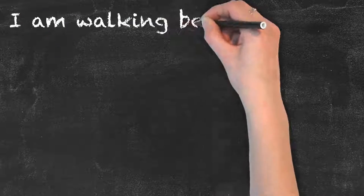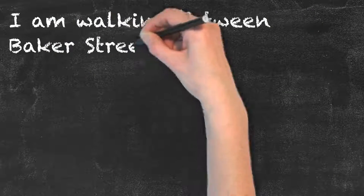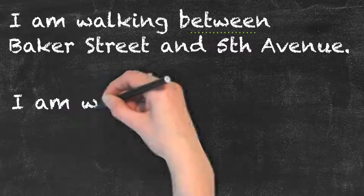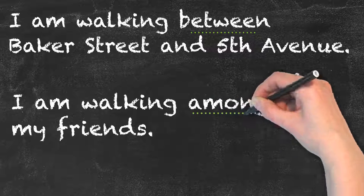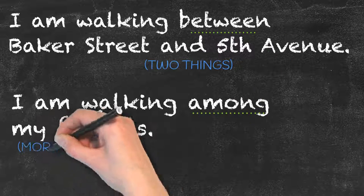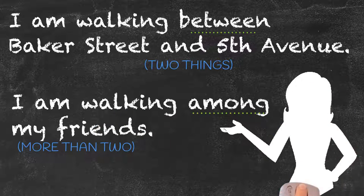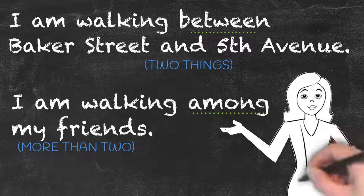More examples to make it clear: I am walking between Baker Street and Fifth Avenue. Here we're talking about two things, two streets, and use 'between.' I am walking among my friends. Here we're talking about more than two people and use 'among.'